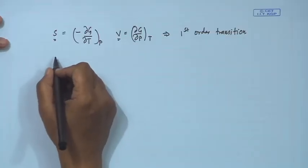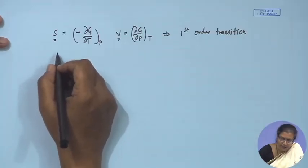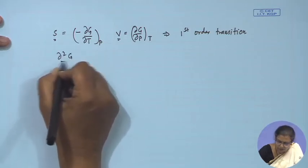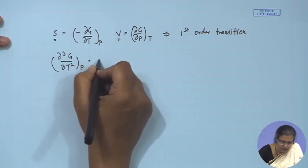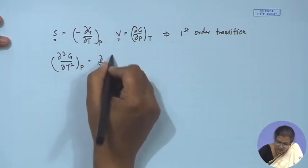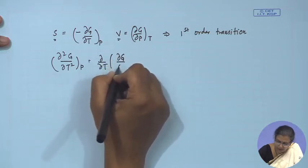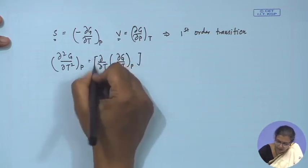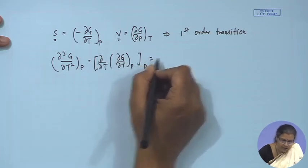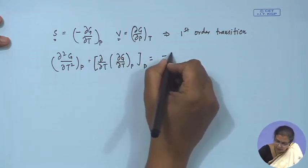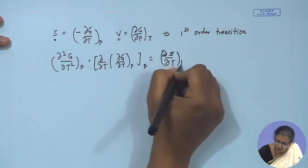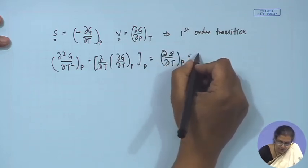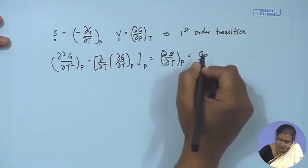The second derivative del²G / del T² at constant P is equal to del/del T of (del G / del T) at constant P, which equals minus del S / del T at constant P, which is nothing but C_p / T. Similarly, del²G / del T del P equals beta times V.